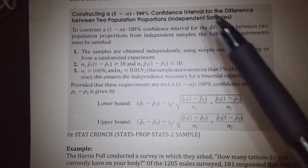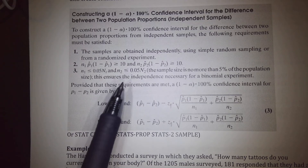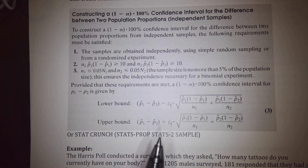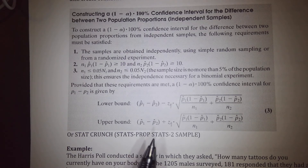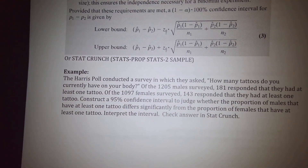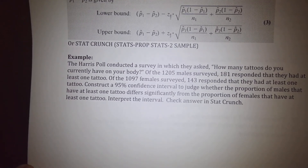Now let's look at a confidence interval for two different population proportions. For independent samples, we again must make sure the three requirements have been met. The lower and upper bounds for the confidence interval use the same formula, differing only by a minus or plus sign. We can also do this in StatCrunch — when I finish this example I'll go back to the previous problem and demonstrate both.